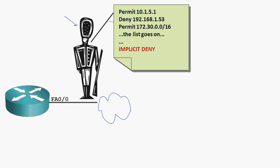That guard is going to stand there, look at the list, and look at the first line: permit 10.1.5.1. A packet comes in and he asks, 'Is that you?' The packet says no. He moves to line two: deny 192 — is this you? No. Line three says permit this whole network — does your address start with 172.30? No. It keeps going through that list on and on. And if it's unlucky enough to reach the very bottom, you hit the invisible implicit deny statement. You don't see it, but it's there, and it denies every bit of traffic that has not been permitted inside that access list.